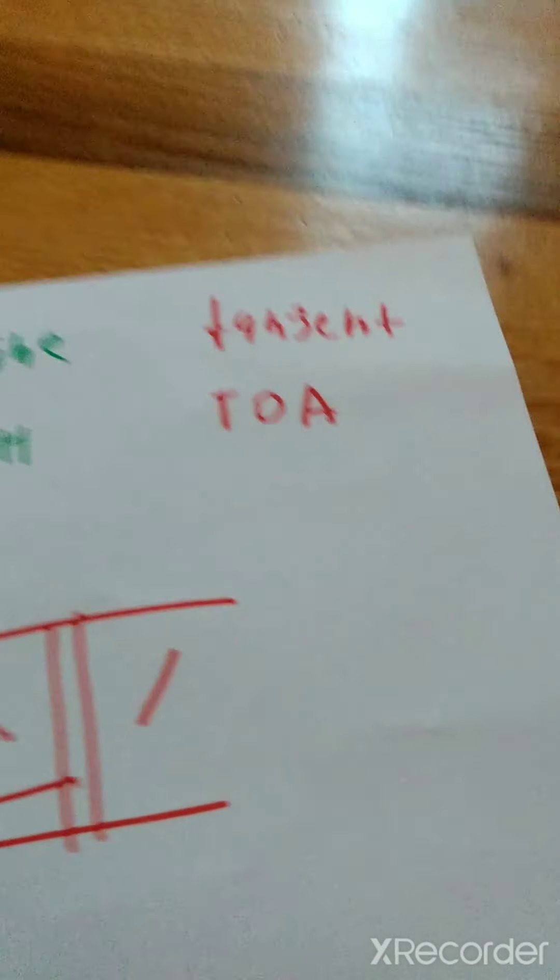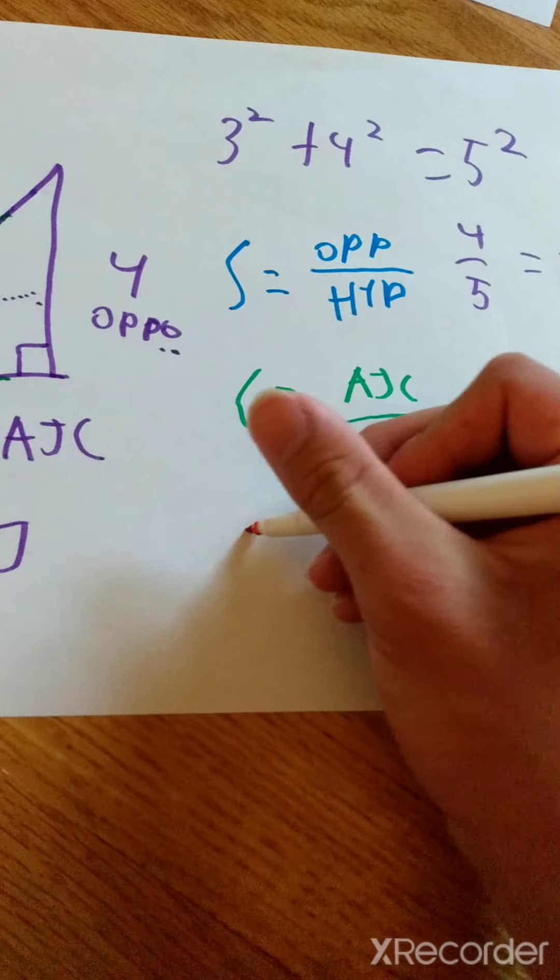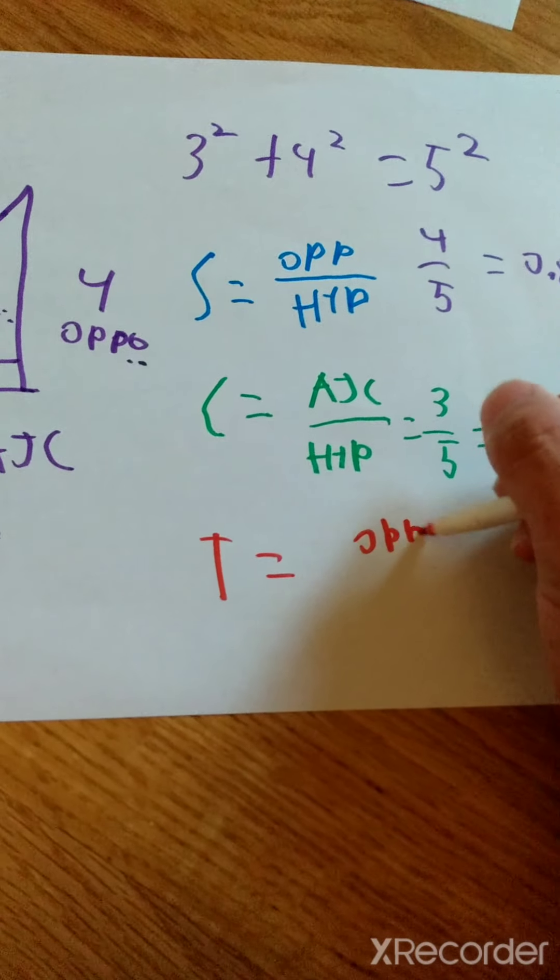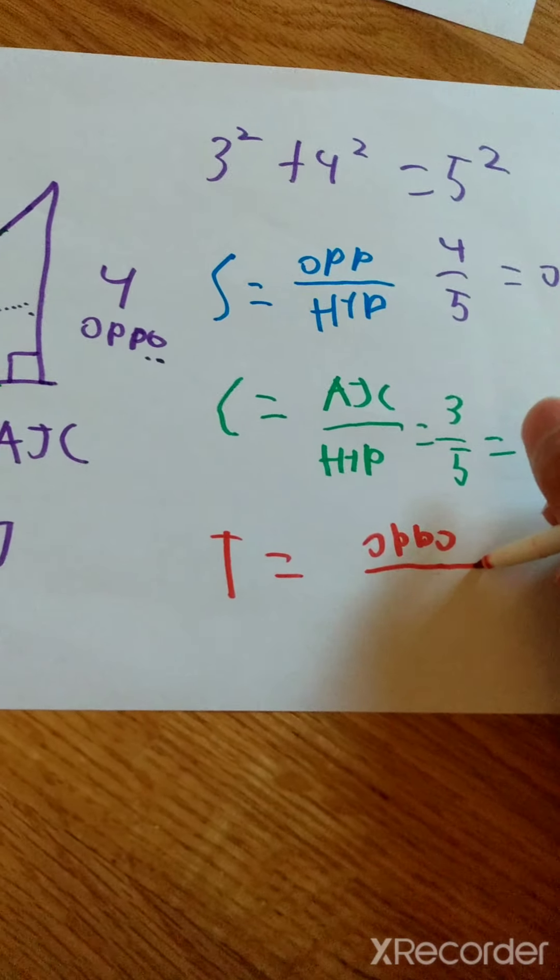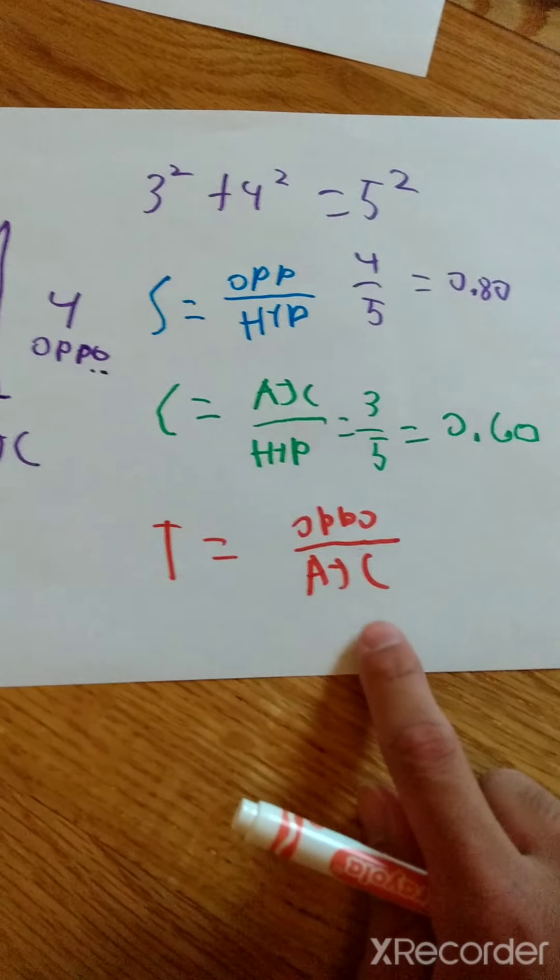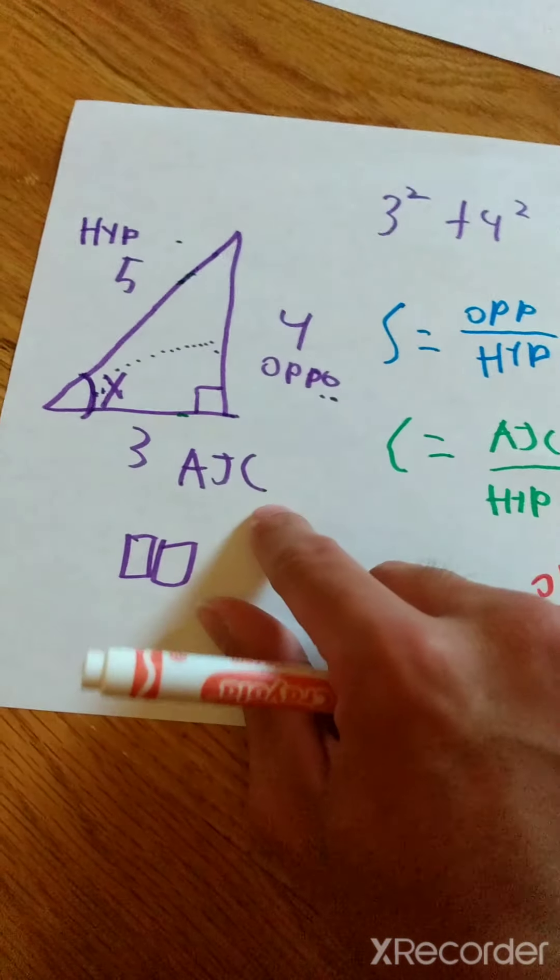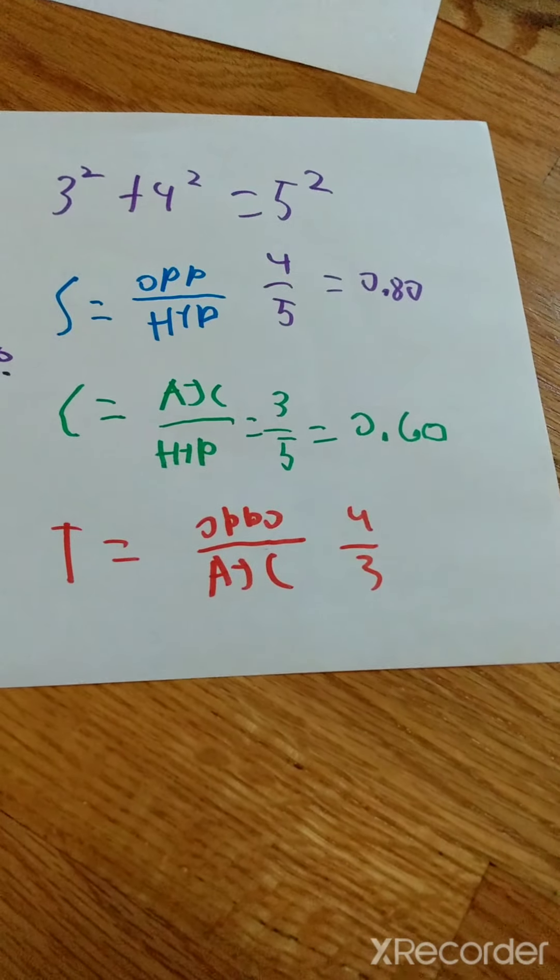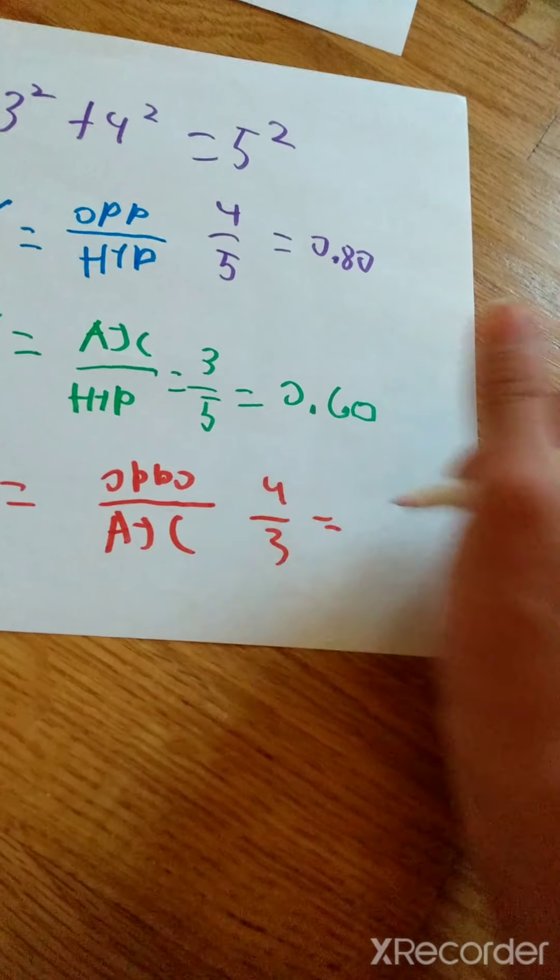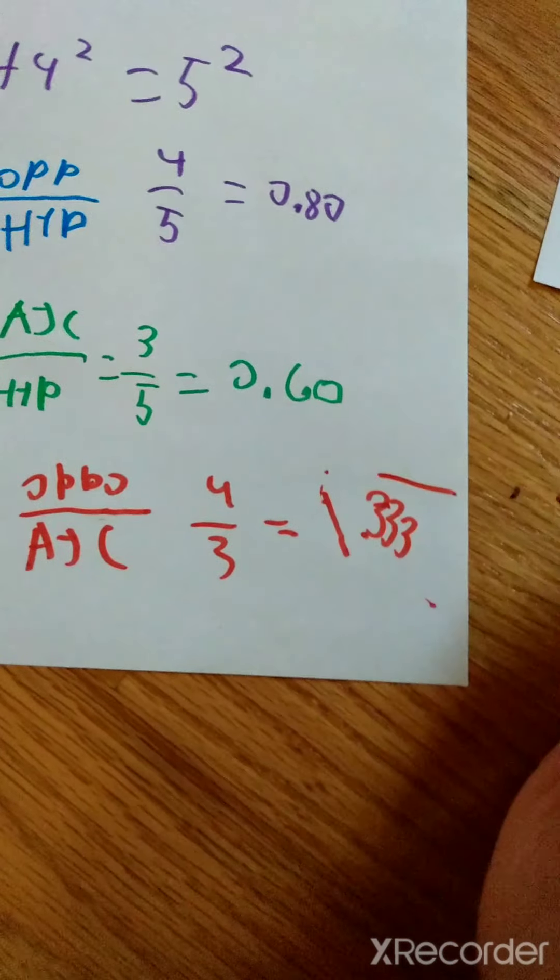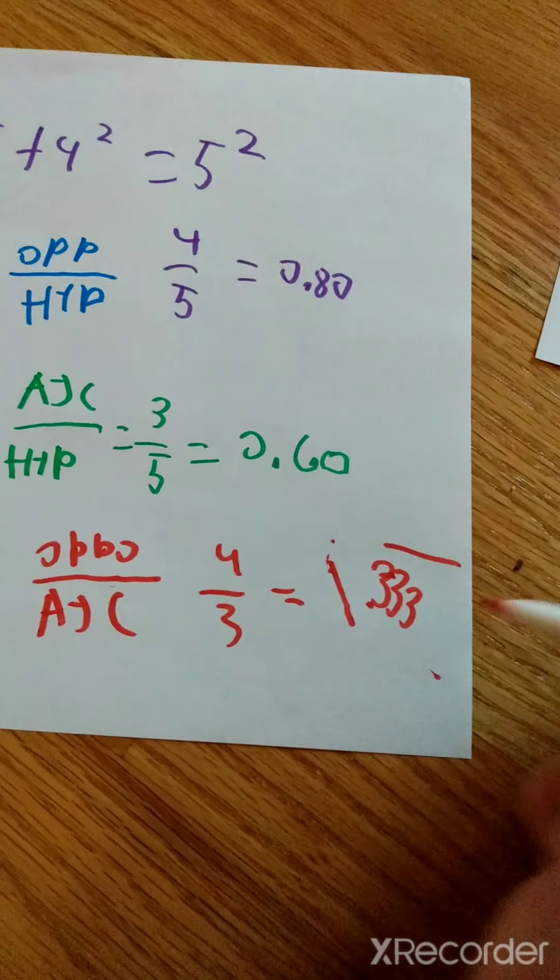Now comes my favorite, the tangent. So the formula for tangent is going to be the opposite, which is this line, the height, the opposite divided by the adjacent, which is this bottom line. So with tangent, when we do opposite divided by adjacent, or we do 4 over 3 or 4 divided by 3, we're going to get a decimal as 1.333, 3, 3, 3 repeating. That is if you turn 4 over 3 into a decimal.